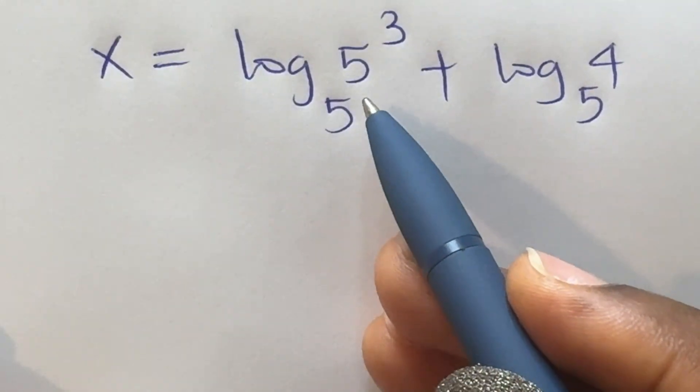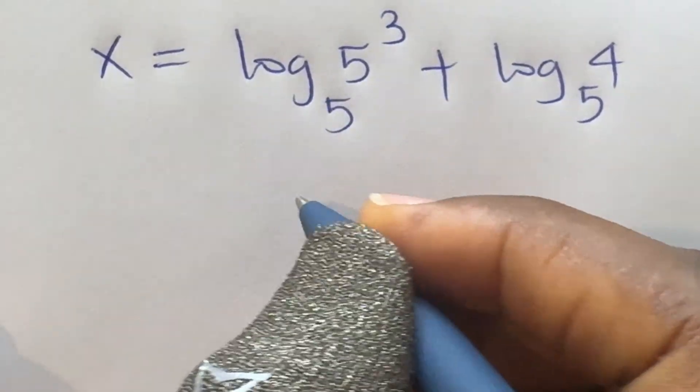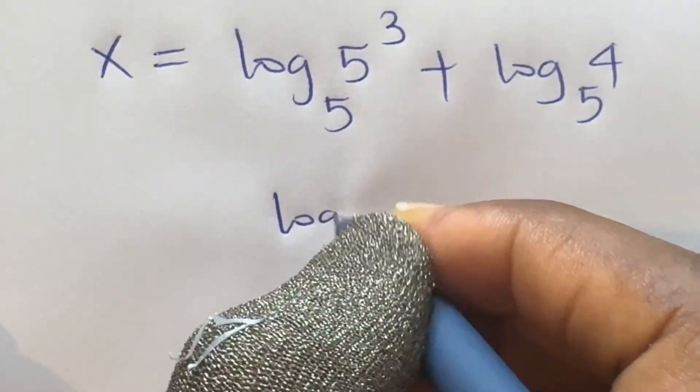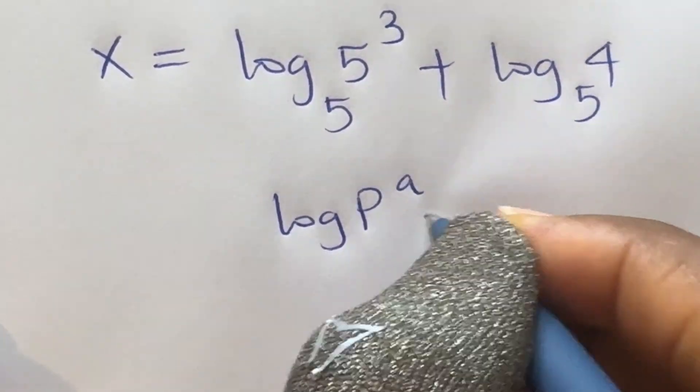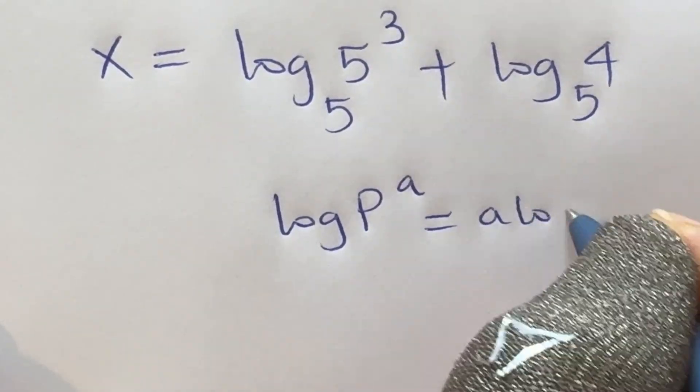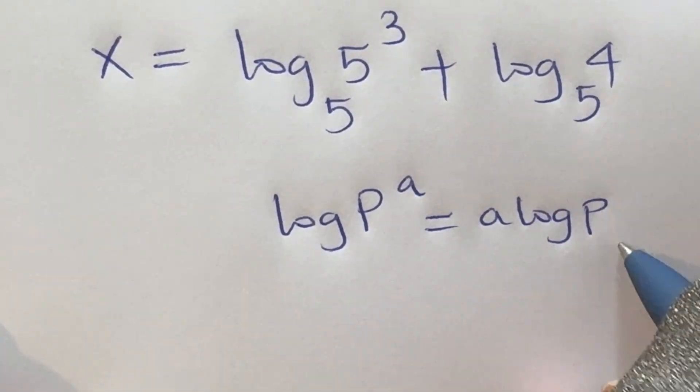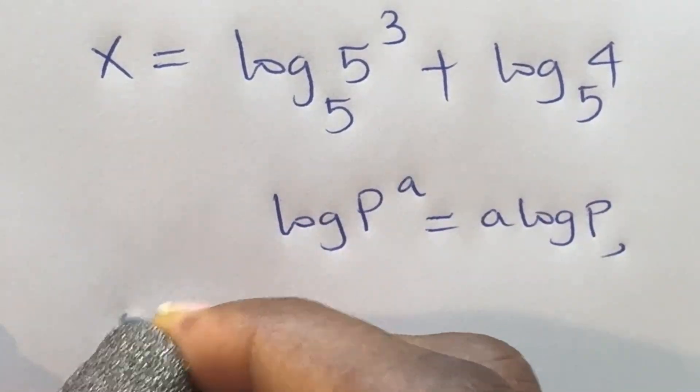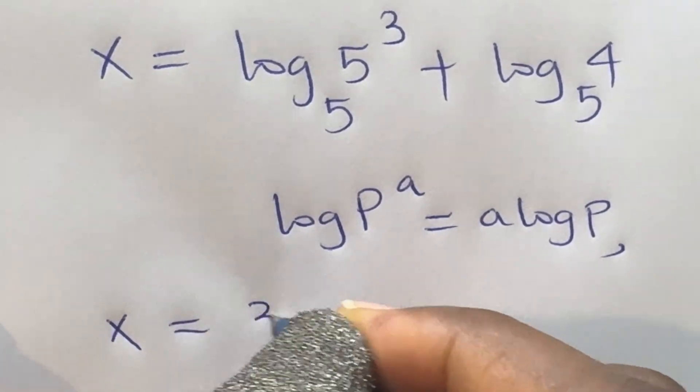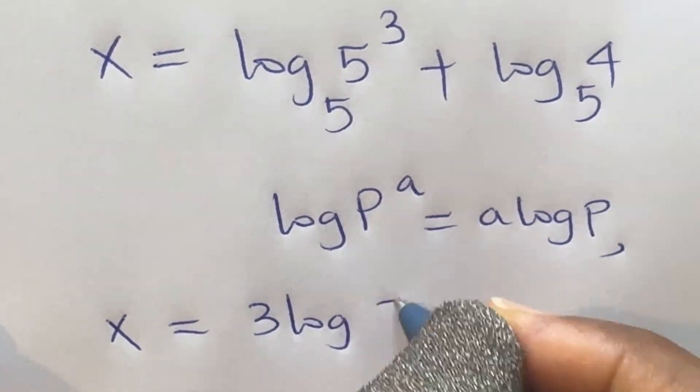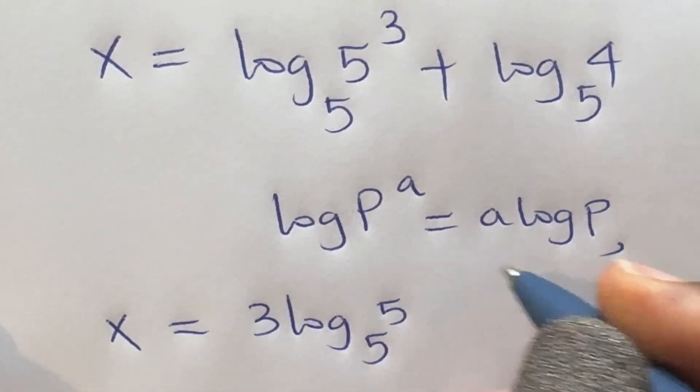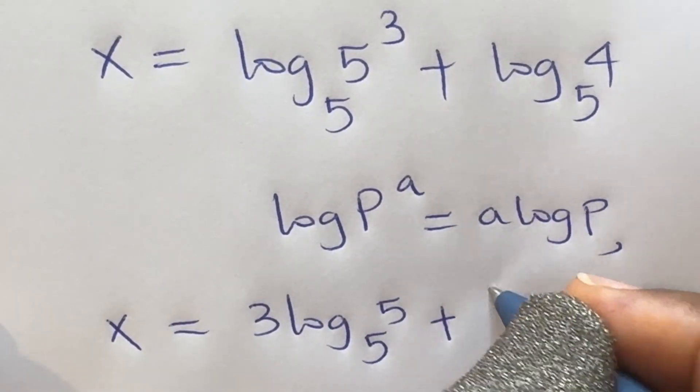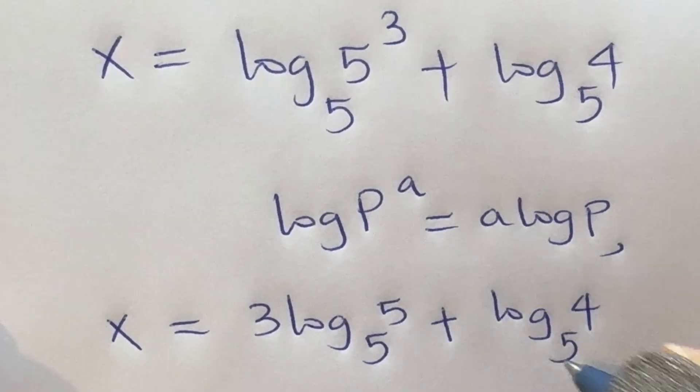Applying the law of logarithm we applied earlier, that is log p raised to power a is equal to a log p, then x becomes 3 log 5 base 5 plus log 4 base 5.